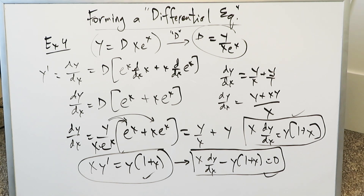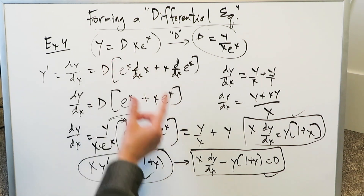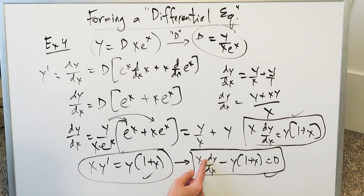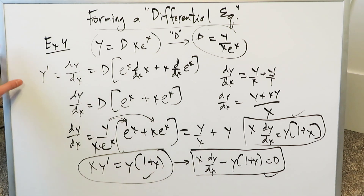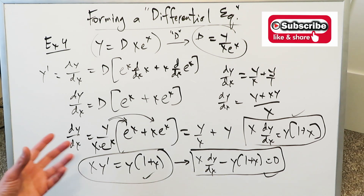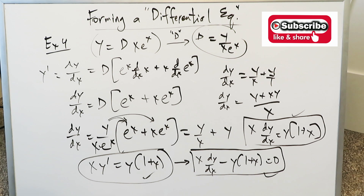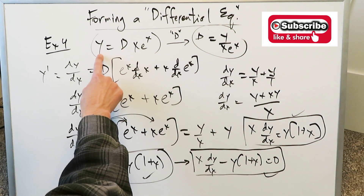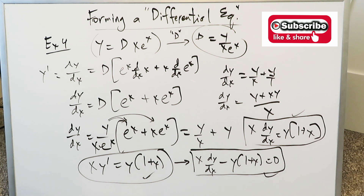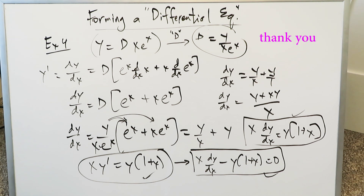And that's the essence of forming a differential equation. If you have a single constant, you'll have a first order differential equation with a first order derivative. Two constants gives a second order; three constants gives a third order. By eliminating the constants, you go from an expression into a differential equation. Your differential equation will be expressed in terms of independent and dependent variables and the derivative of y with respect to x — with no constants remaining. Thank you for watching. Have a great day.